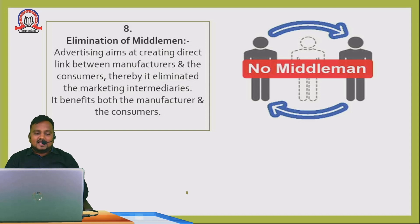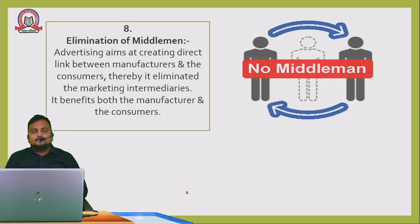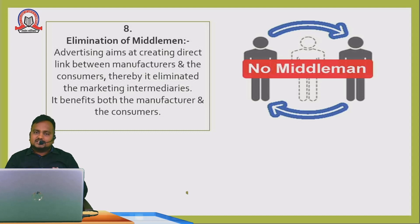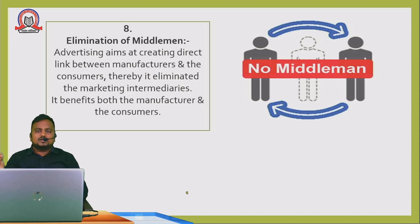Next is elimination of the middleman. Advertisement aims at creating a direct link between the manufacturer and the consumer, thereby eliminating marketing intermediaries. For example, sometimes when you turn on the TV, you see products being sold directly — they say 'call this number' or 'book online and get it delivered home'. There is no middleman — directly from manufacturer to consumer. The manufacturer gets more profit because the middleman used to take a cut. So it is beneficial for both.